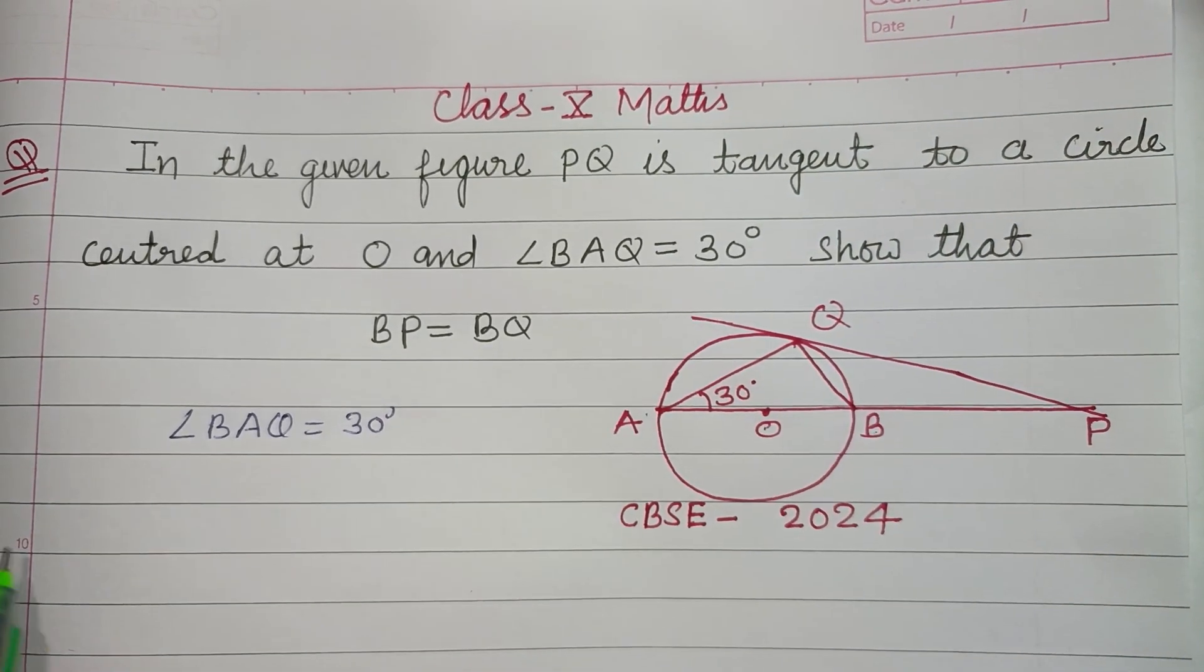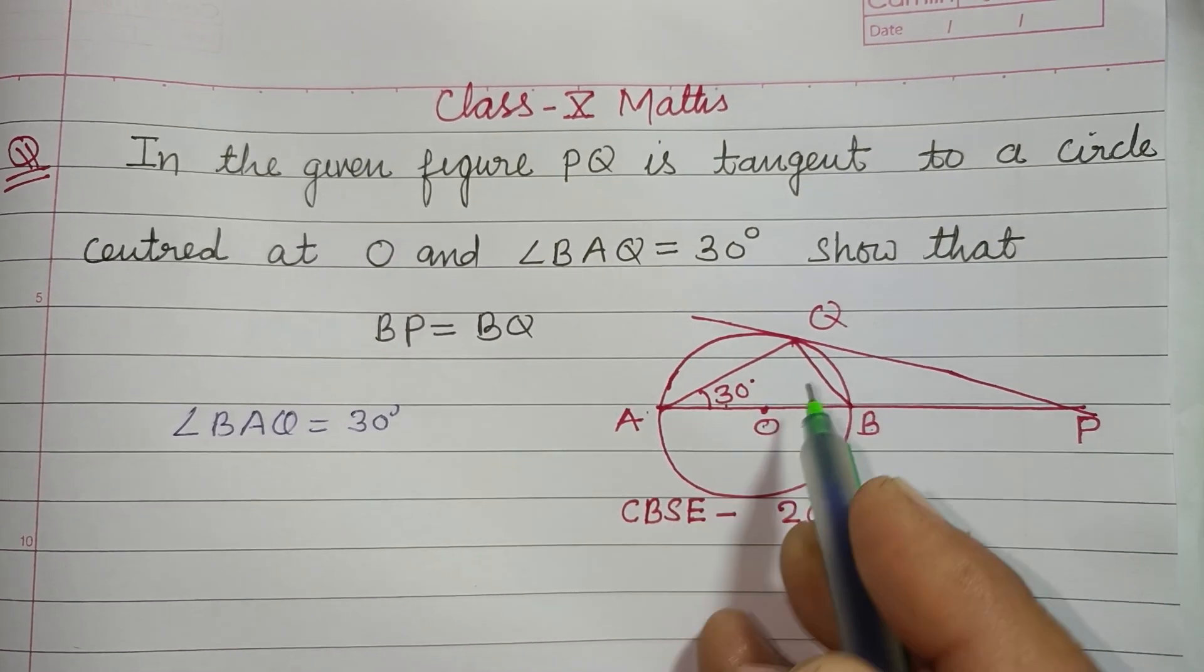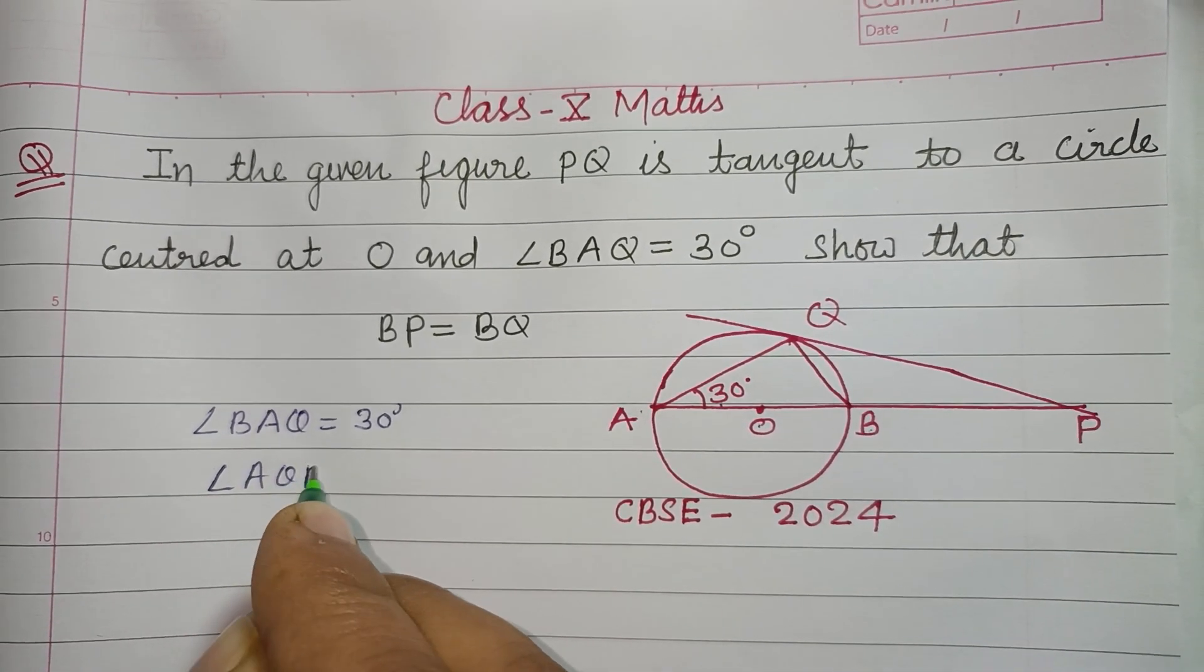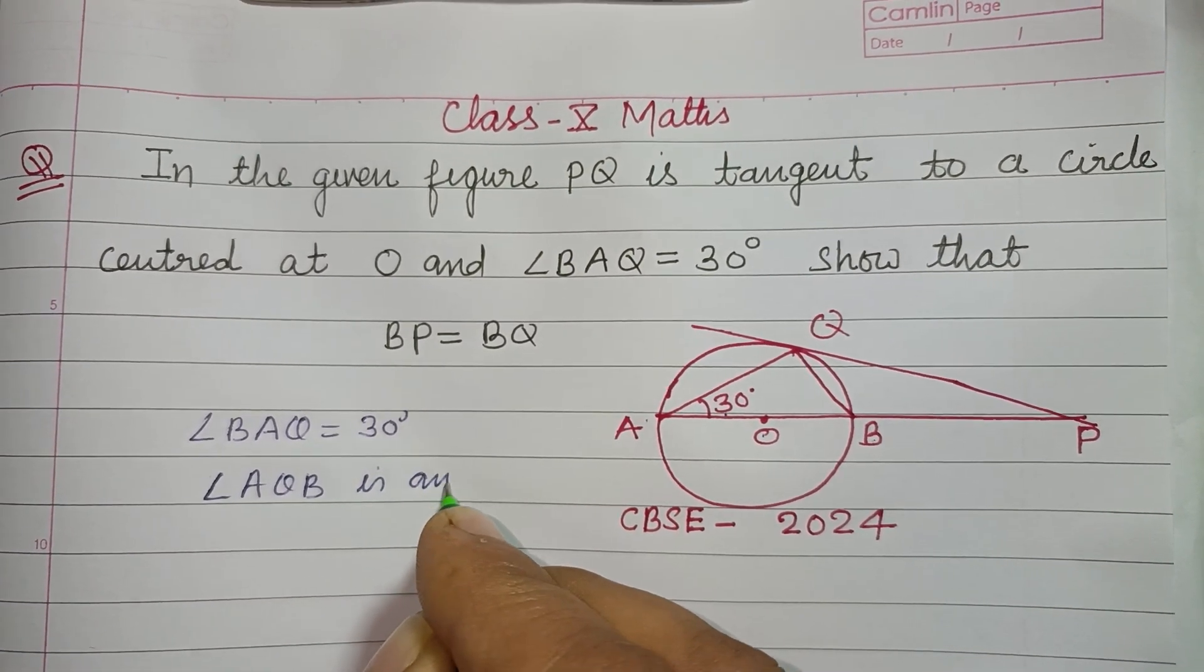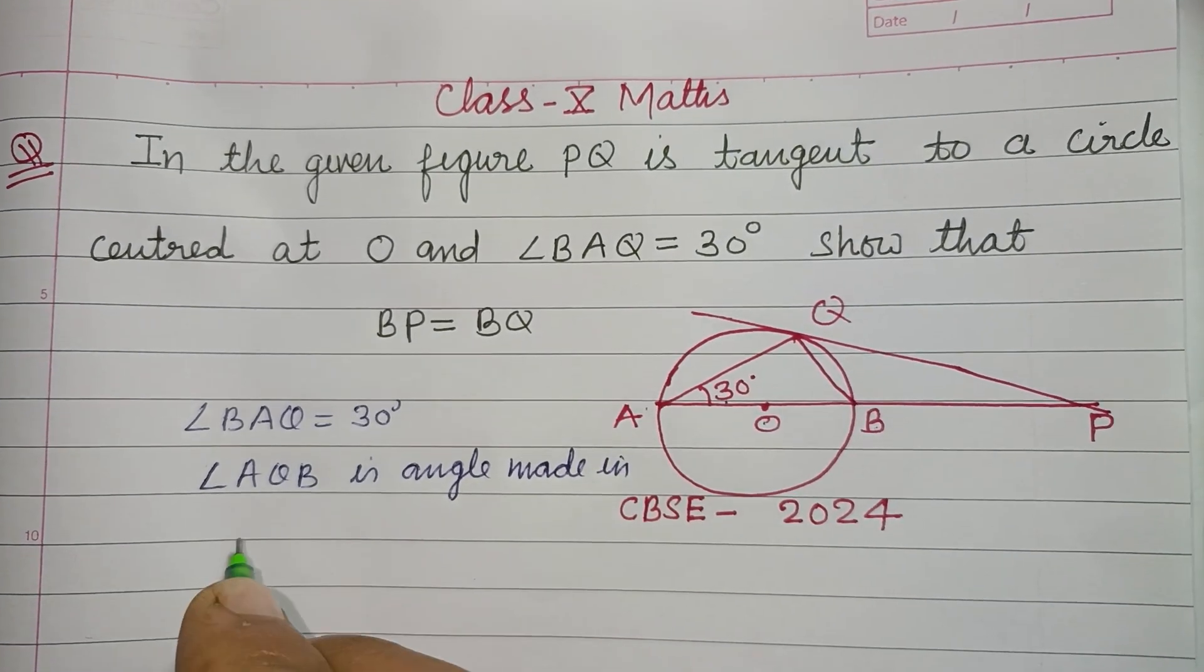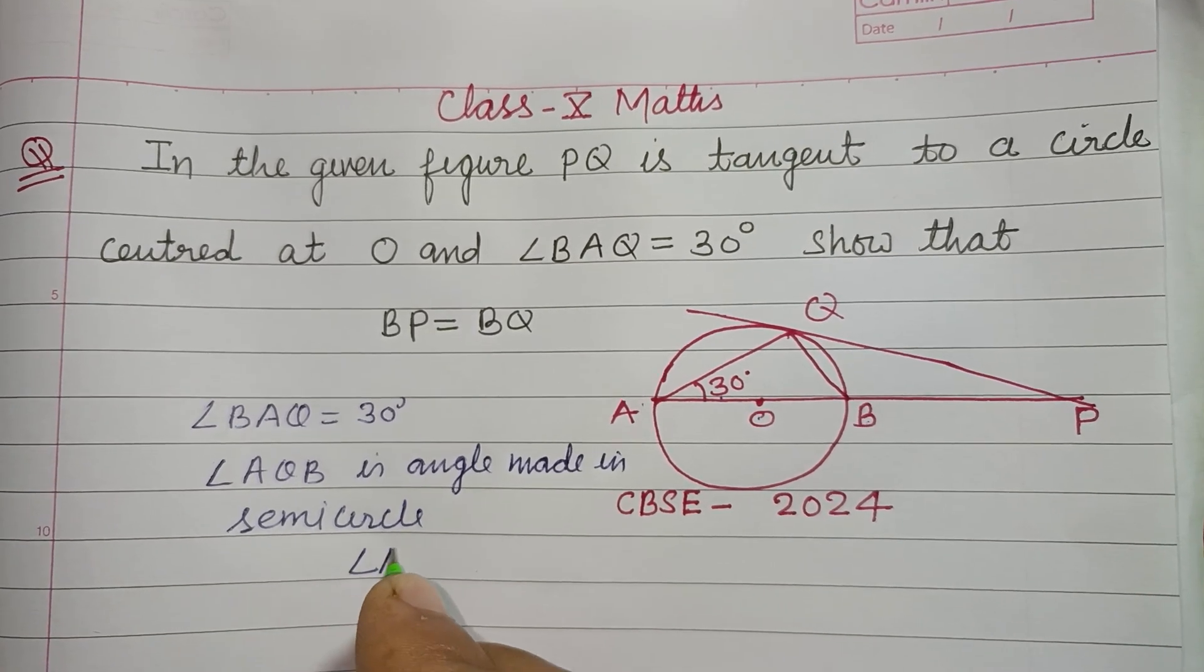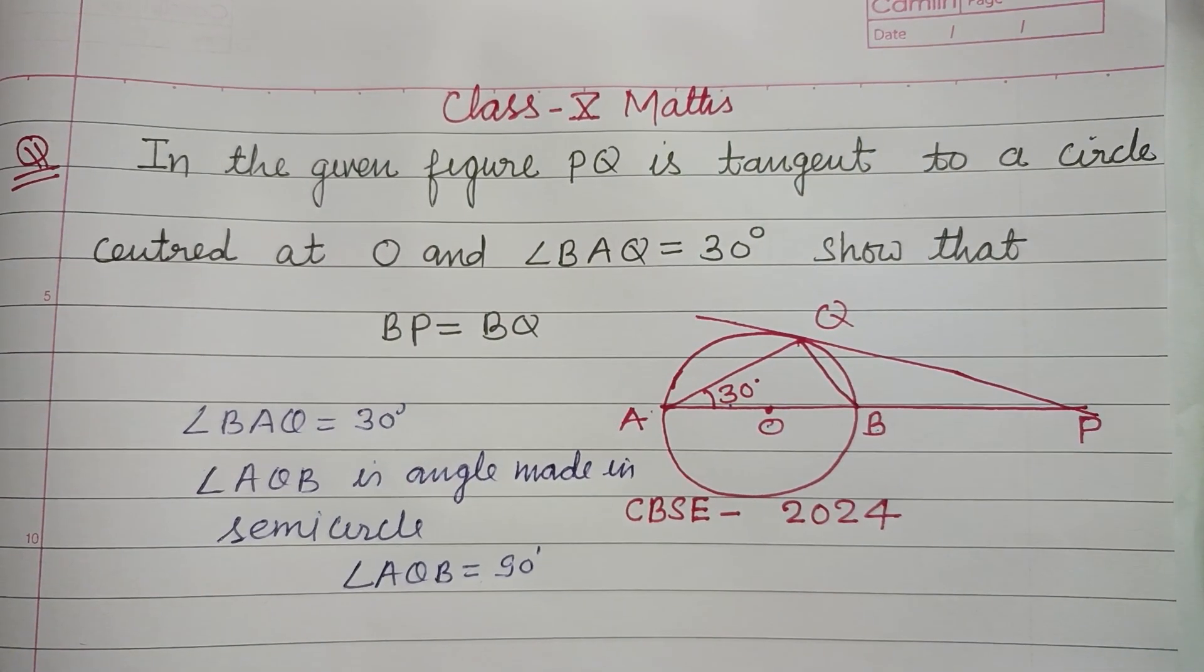Here angle BAQ is given as 30 degrees. You know that angle AQB is an angle made in a semicircle, so its value will be 90 degrees. The angle in a semicircle is a right angle.